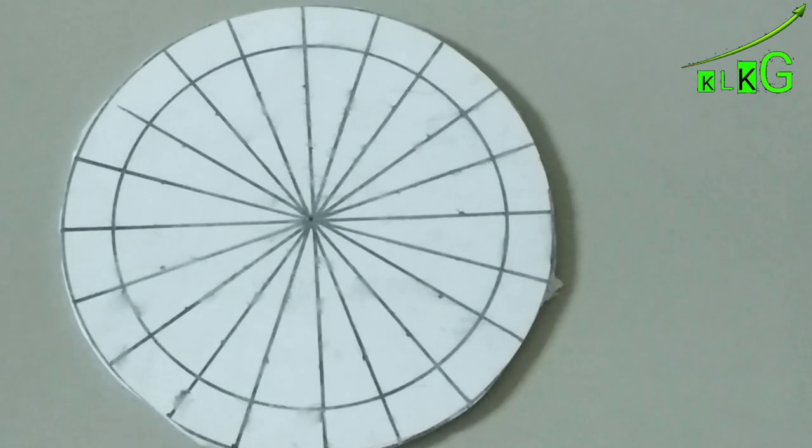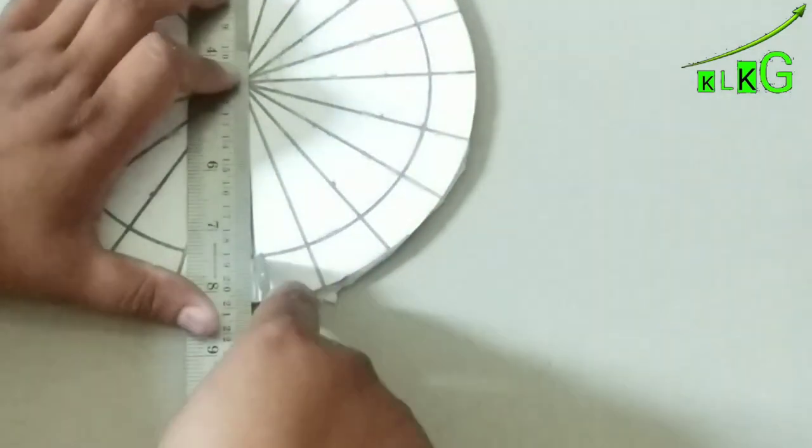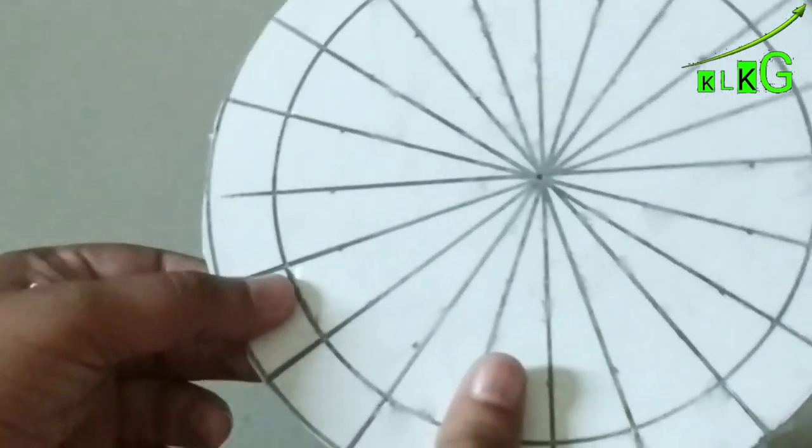So finally we get like this. As you can see, we have to cut with a cutter and from the edges we have to make cuts. As you can see here, I already cut like this, so this way we are going to get a circle.